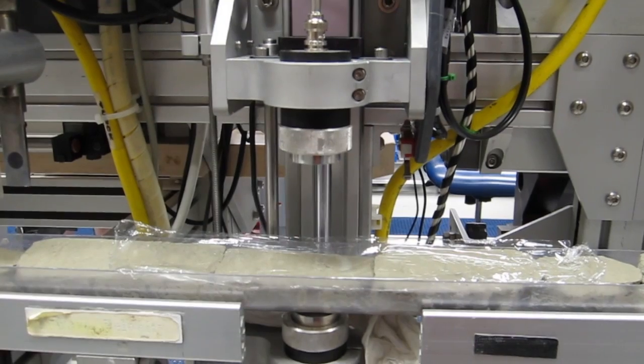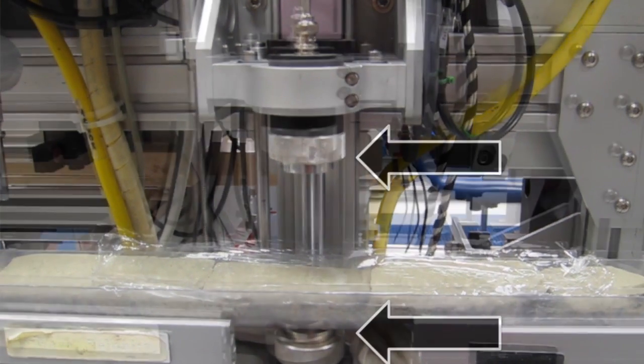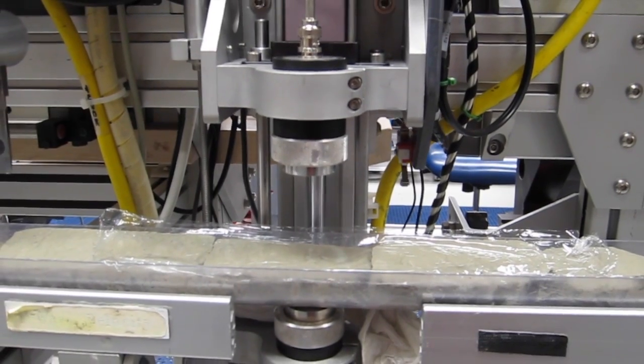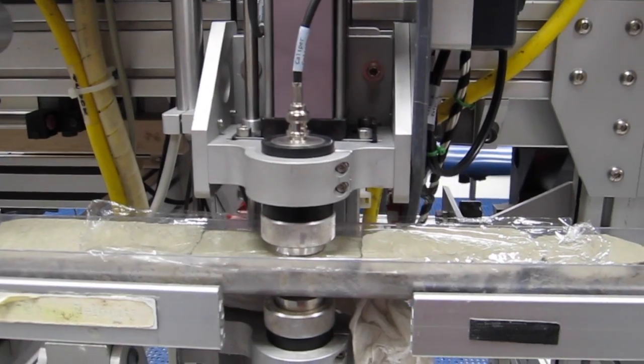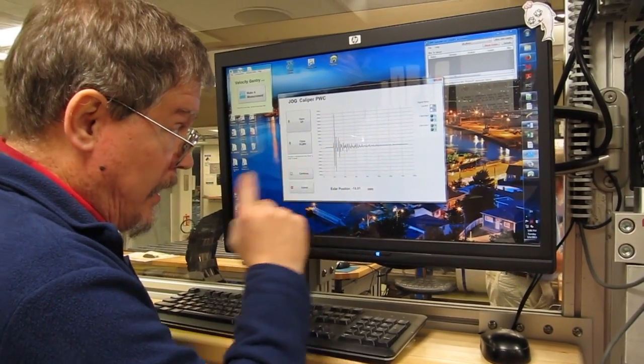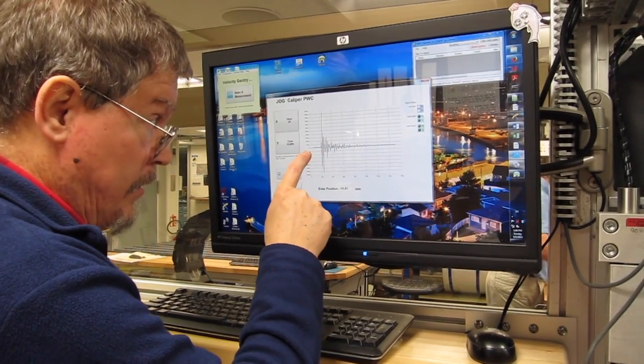We're going to close the two transducers and bring it down. Now you see we're closing the two transducers and they've come together. We have an image of the arrival of the sonic wave as it's going through.